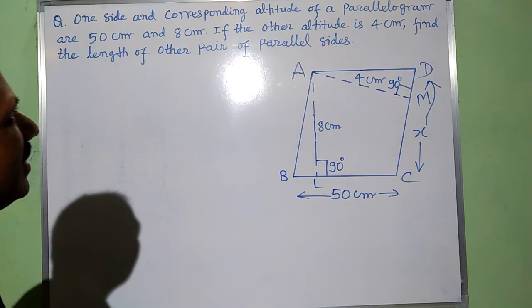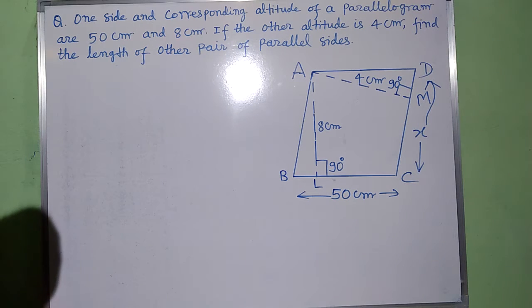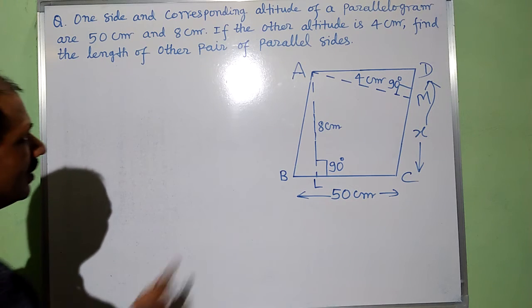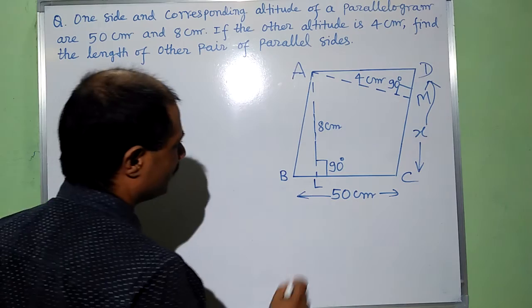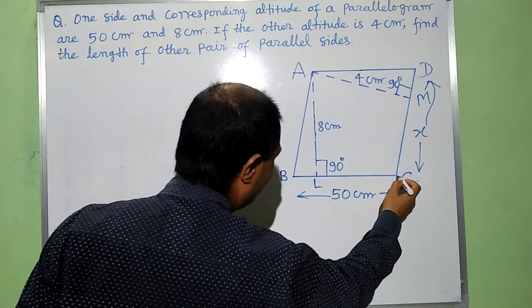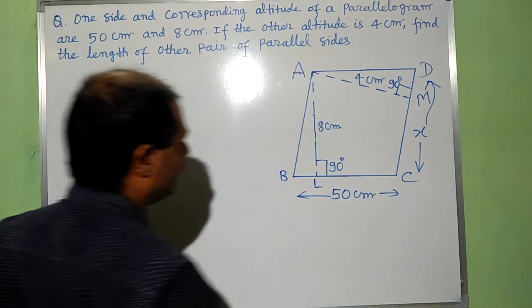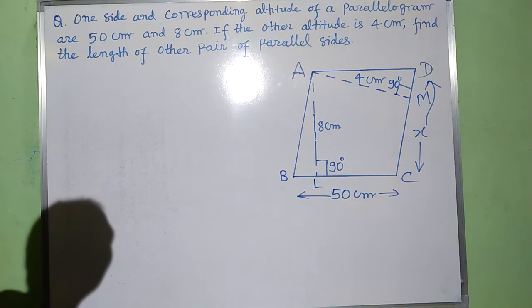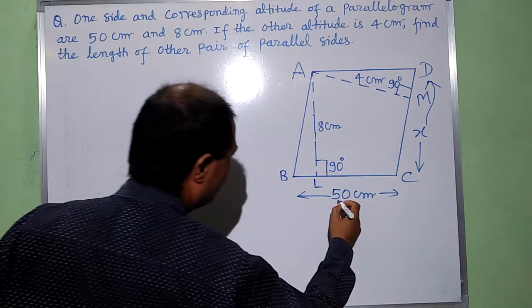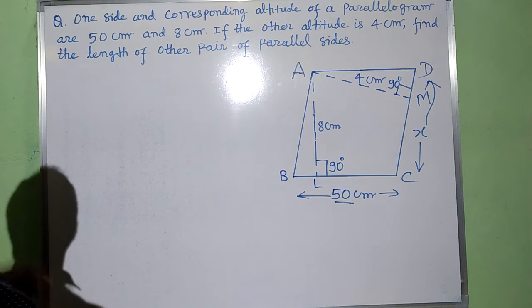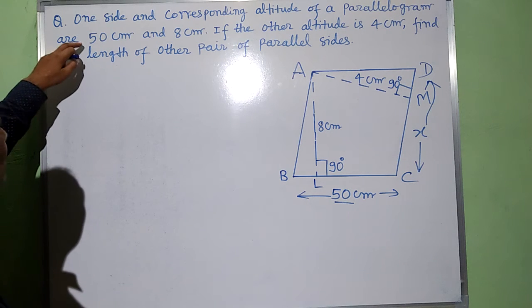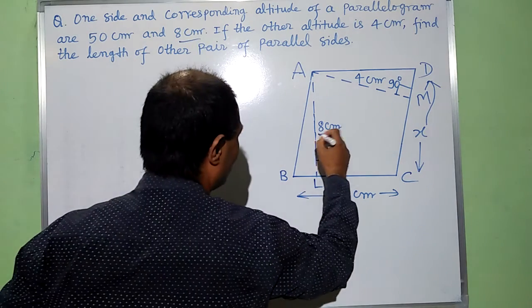One side and corresponding altitude of a parallelogram are 50 cm and 8 cm. This is a parallelogram ABCD in which BC and AD is one pair of parallel sides. Its length is given 50 cm, then its corresponding altitude, that is 8 cm, this is also given.